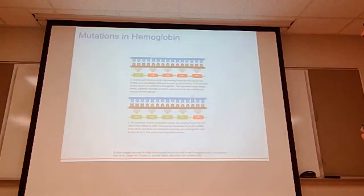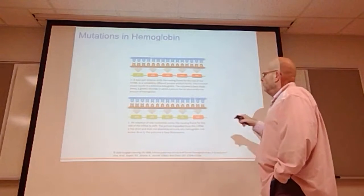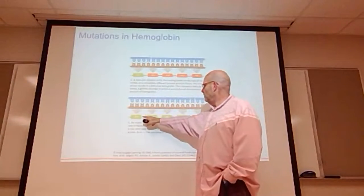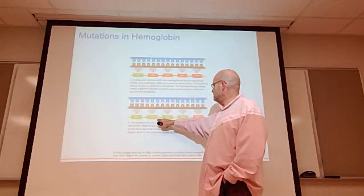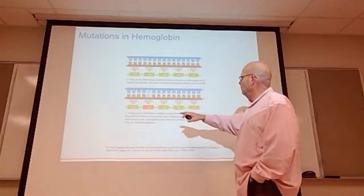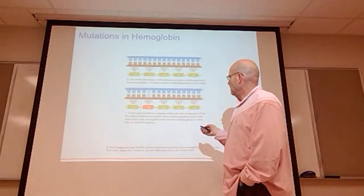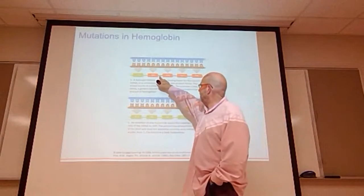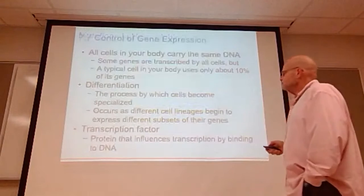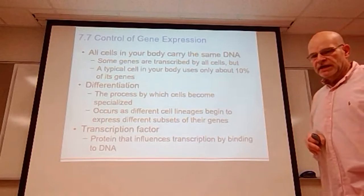Once you see a frameshift, every codon from that point on is different — this is what the sequence should look like, but because of the frameshift this is what we get. Starting with one base pair substitution can lead to a frameshift where everything downstream is altered.